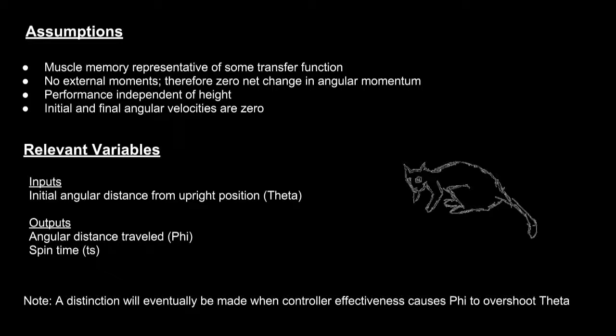For simplicity, we established that our model only has one input. The initial angular distance from the upright position, represented by theta, will be the initial angle the cat is at. For example, if the cat starts on its back, upside down, the initial angle will be 180 degrees. Because we only had one input, we resulted with only two outputs. The angular distance traveled, represented by phi, will be the total angle the cat spins. And spin time will be the time it takes for the cat to complete its full rotation.